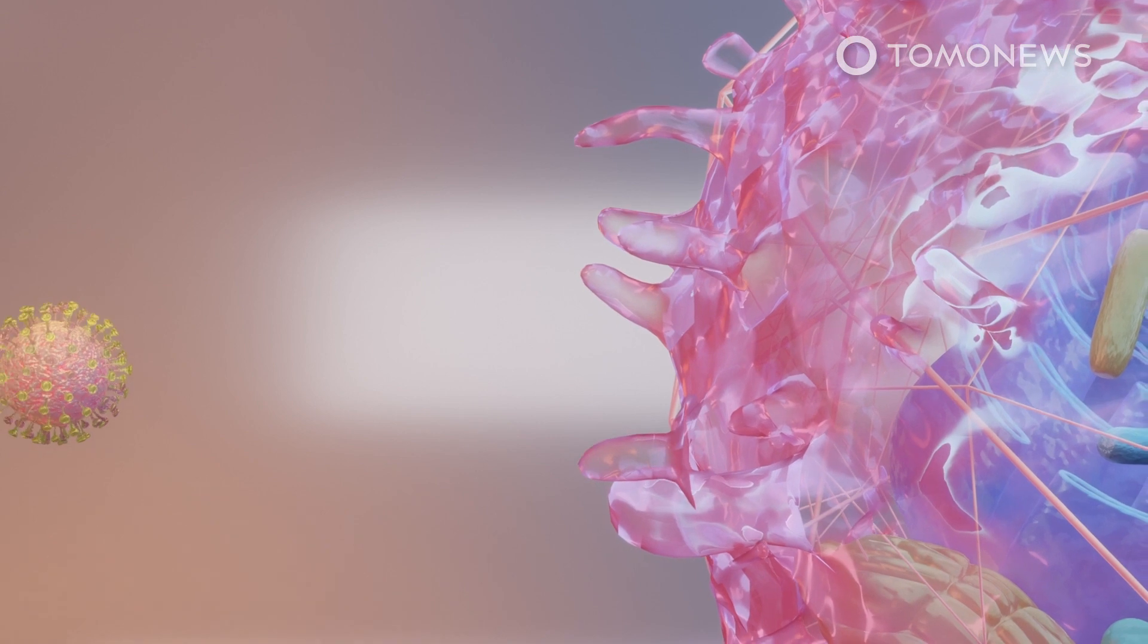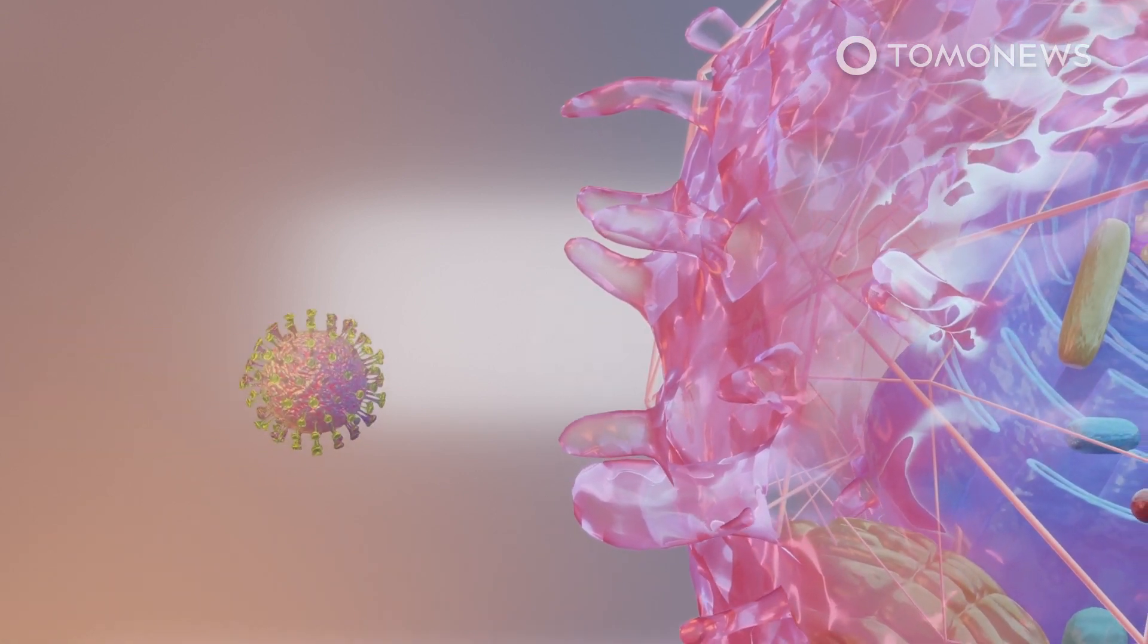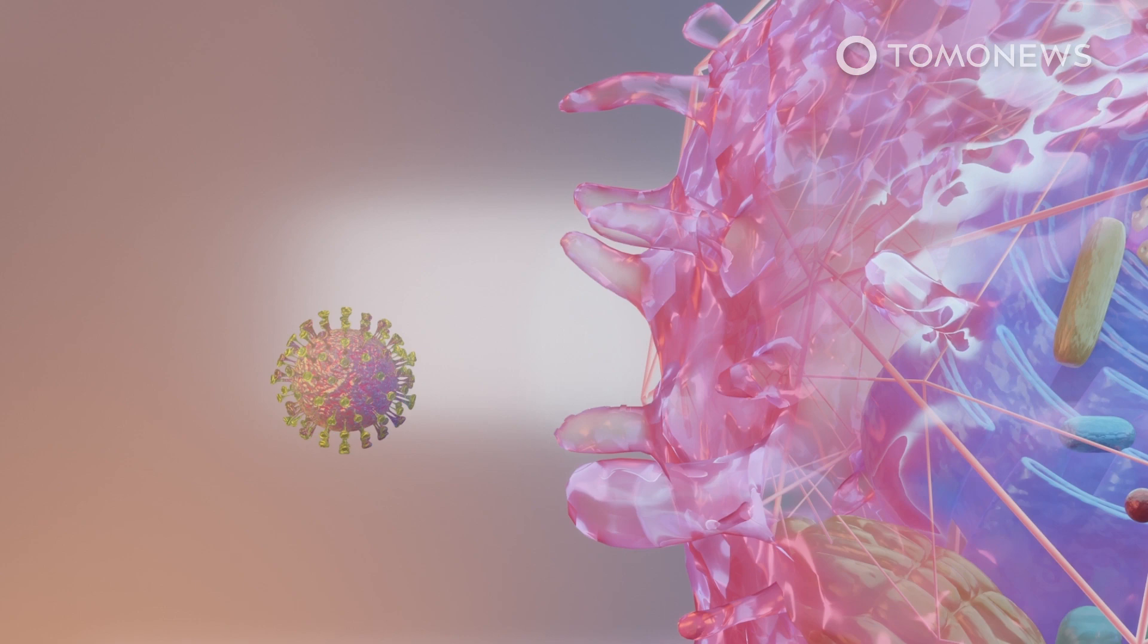The virus uses the spike protein's UP-RBD to bind with the ACE2 structure, which enables the virus to enter and infect the cell.